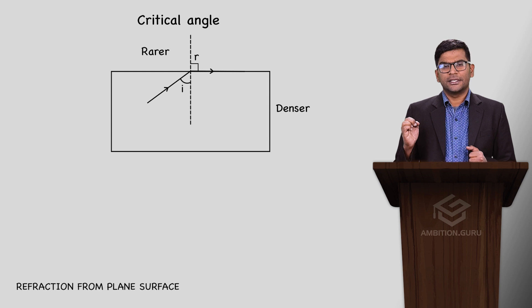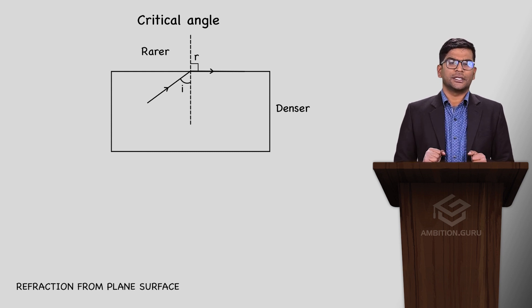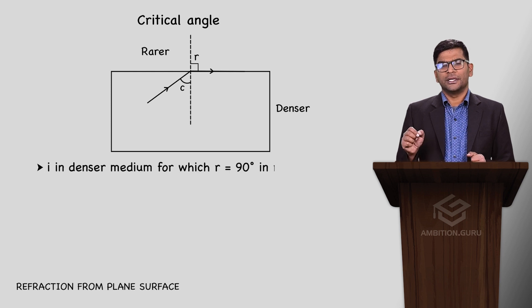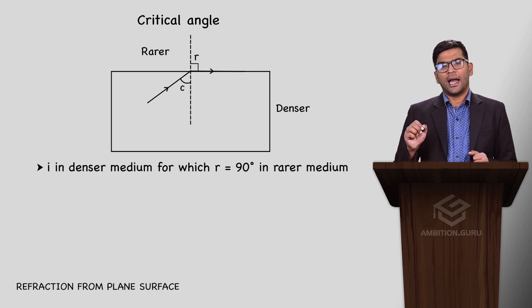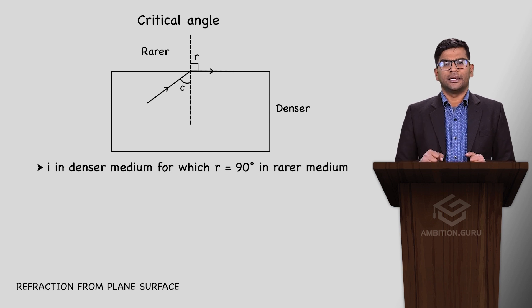When the angle of refraction becomes 90 degrees in the rarer medium, the corresponding angle of incidence in the denser medium is called the critical angle. Critical angle is the angle of incidence in denser medium for which the corresponding angle of refraction in rarer medium is 90 degrees.